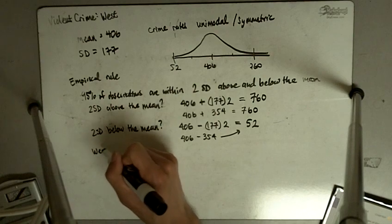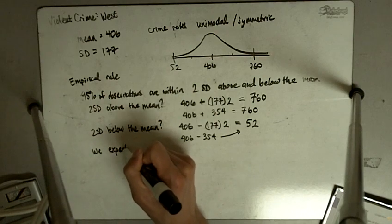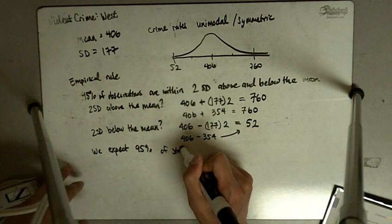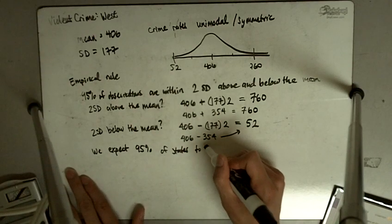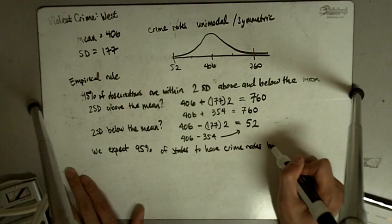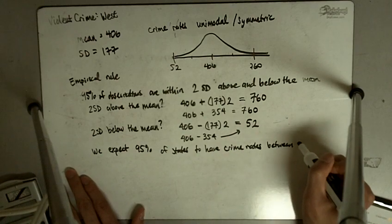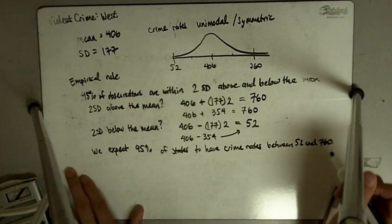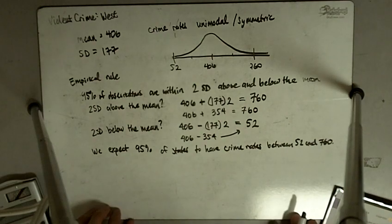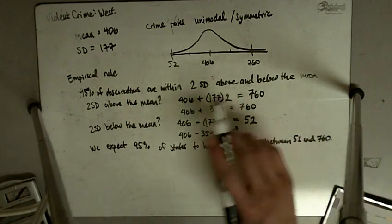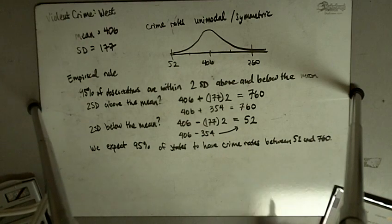So we expect 95% of states to have crime rates between 52 and 760. That's what this represents — about 95% of the states will have crime rates between these two numbers.